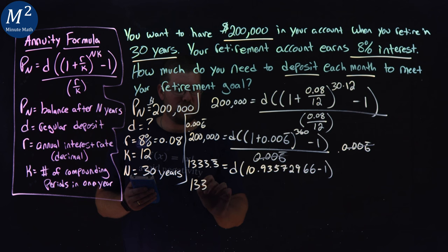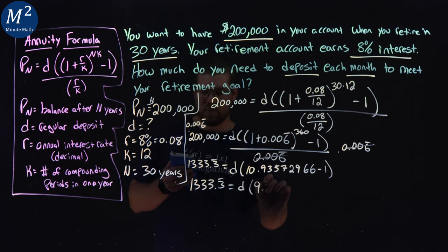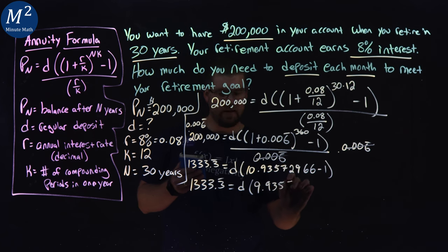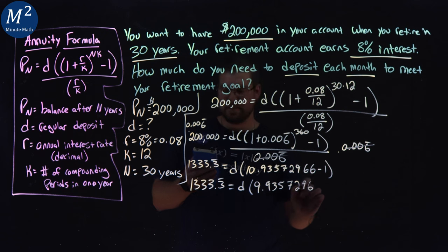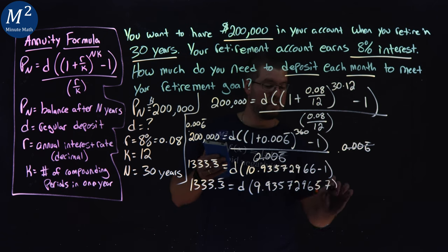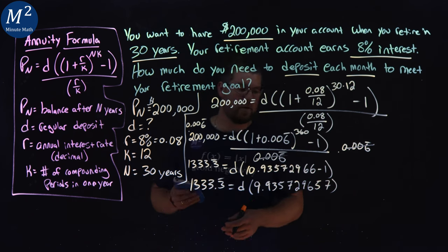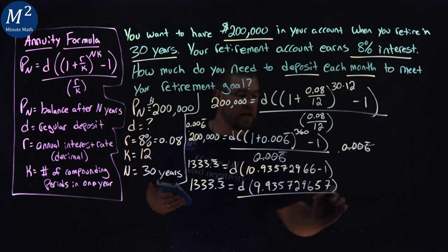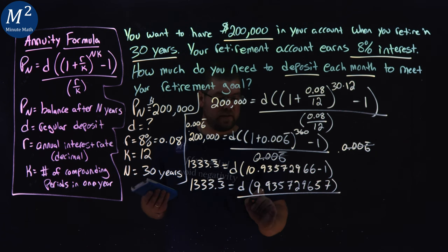So we have 1333.3 repeating equals D times 9.9357296. Calculator told me what it is. Fantastic. Divide that number to both sides to get D by itself.